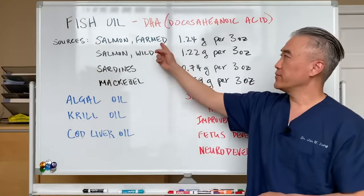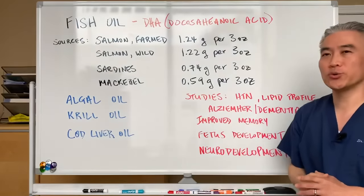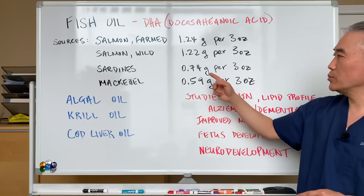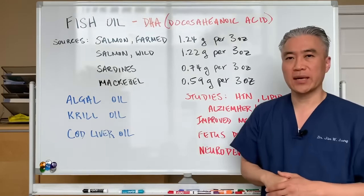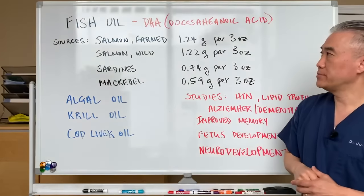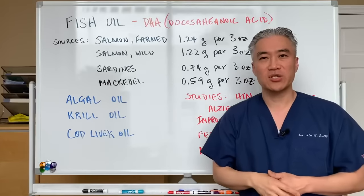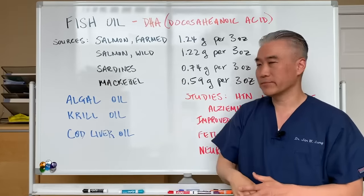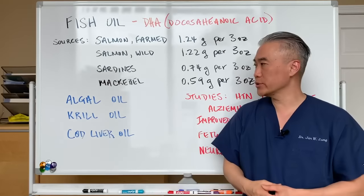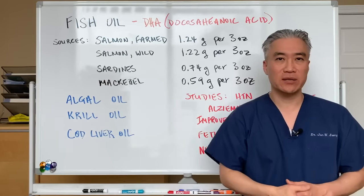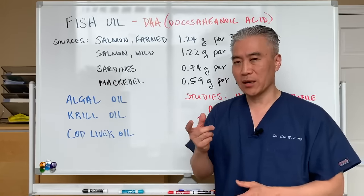In terms of food sources: farmed salmon provides 1.24 grams per 3 ounces, wild salmon 1.22 grams per 3 ounces, sardines 0.74 grams, and mackerel 0.59 grams. Farmed salmon actually has slightly more than wild, likely because of the feed, but farmed fish has its own problems so go with wild. You can also find DHA in algal oil, krill oil, olive oil, or fish oil. Different sources have different DHA levels, so it's important to check the labeling.